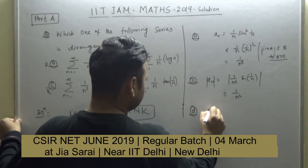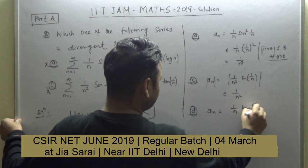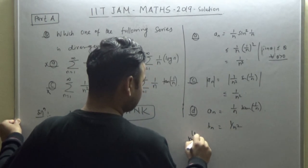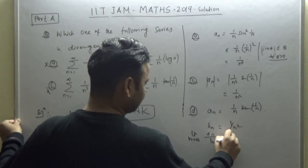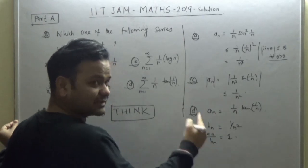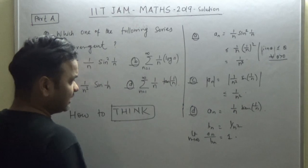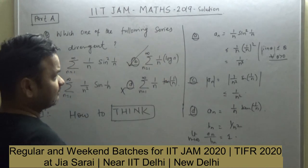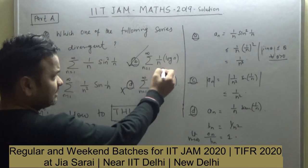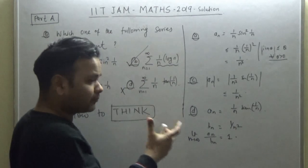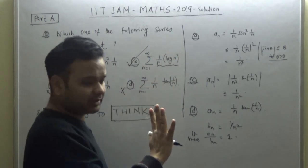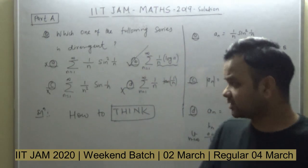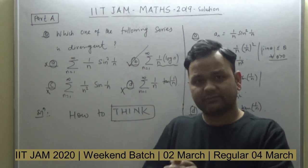The most important case is (D), where an = 1/n · tan(1/n). For this, let bn = 1/n². Evaluate the limit as n → ∞ of an/bn. You will get 1. By the limit comparison test, since the limit is 1 and bn = 1/n² is a convergent series, series (D) also converges. You are asking about the divergent one — so (D) is not the answer. Hence the correct option is (B), which is divergent.